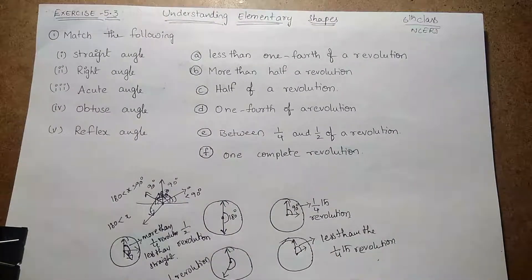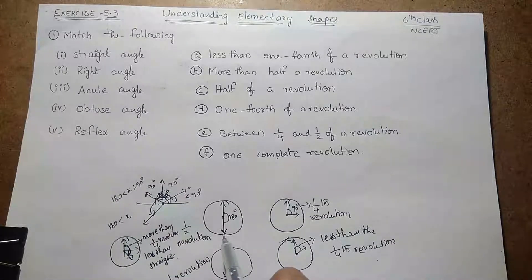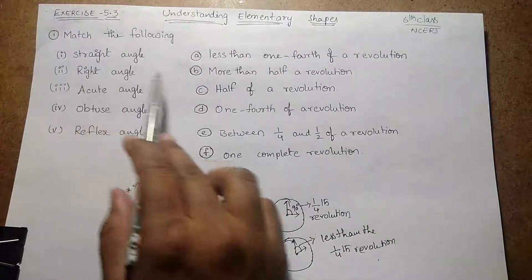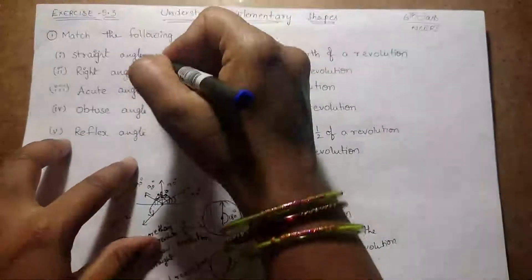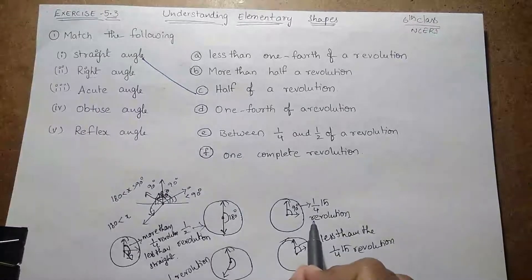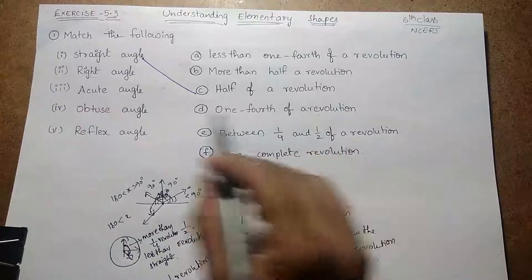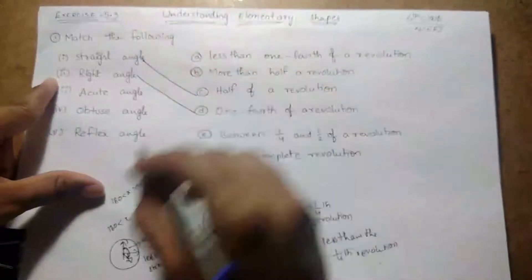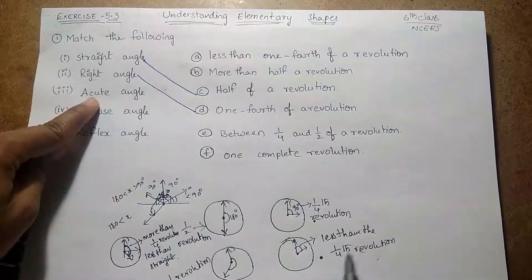Now we can get the answers easily from this brief explanation. Straight angle is half of a revolution, so the answer is option C. Right angle is one-fourth of a revolution. Acute angle is less than one-fourth revolution.